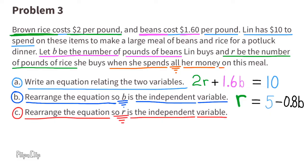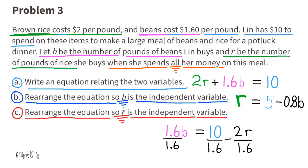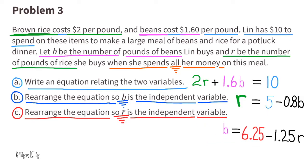C. Rearrange the equation so R is the independent variable. Starting with 2R plus 1.6B equals 10, subtract 2R from both sides. 2R minus 2R cancels out. Then divide both sides by 1.6 to get B by itself. 1.6B divided by 1.6 equals B, 10 divided by 1.6 equals 6.25, and negative 2R divided by 1.6 equals negative 1.25R. The equation is B equals 6.25 minus 1.25R.